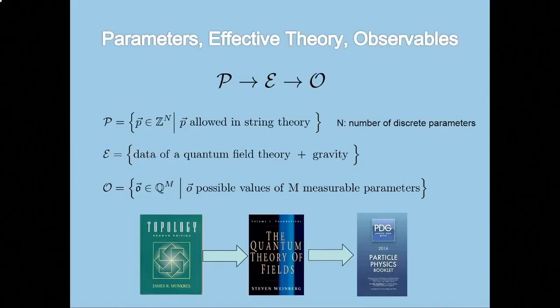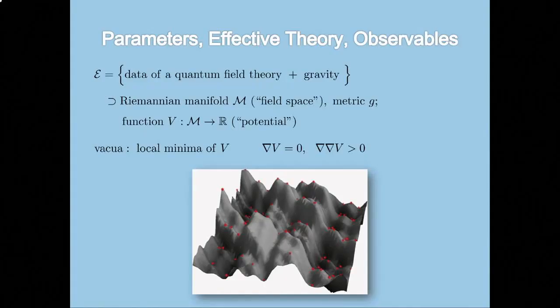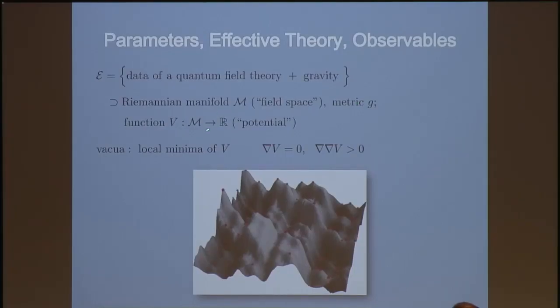So we can conceive of this as a map from parameters to observables where the parameters are all the values of N integers that are allowed by the theory. N is the number of parameters. So think of it as a thousand. The observations are some finite precision. Well, you could think of them as real numbers if you want, but of course, we only measure stuff to finite number of decimal places in experiments. The observations are the possible values of some measurable parameters. So like the things that go in the particle data book, the list of all the numbers we've figured out from all the particle experiments today. This map is too hard, and so we always have an intermediary step, where we convert from fundamental parameters to the data of a quantum field theory and then from there to observations.